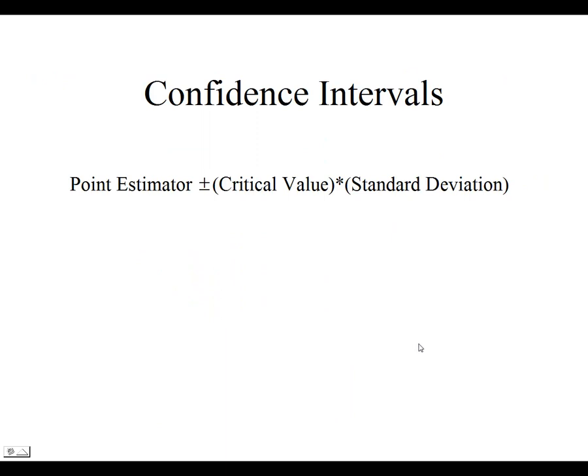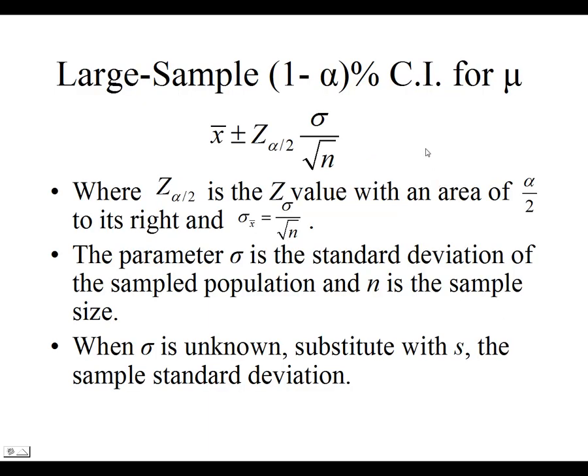Every confidence interval is broken into three parts. You've got the point estimator, which is going to be the center of the confidence interval. It's in the center because we're adding and subtracting an error term. The error term is always a critical value multiplied by the standard deviation of the point estimator. For a large sample confidence interval for the mean μ, our point estimator for μ is x̄. The distribution we're going to be able to use is z distribution because we have 30 or more data points. So, Z_{α/2} is our critical value, and the standard deviation of x̄ we determined earlier to be σ over square root of n.